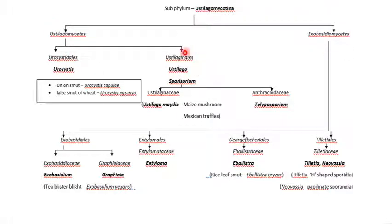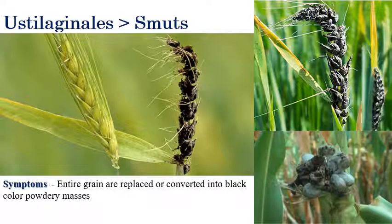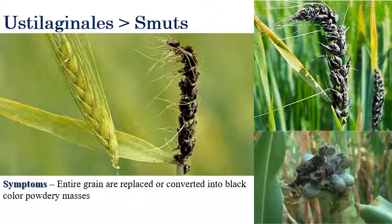So many fungi come under this, and if you see all of them you will get confused. We will focus on the important fungi from Ustilaginomycotina. Mostly, Ustilaginales are smuts. Smuts are the most important fungi we have to consider from Ustilaginomycotina.